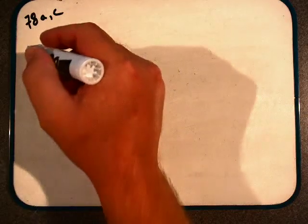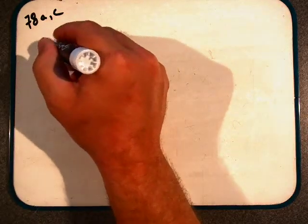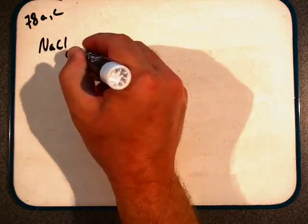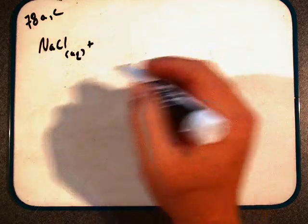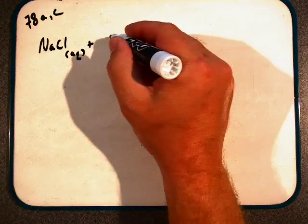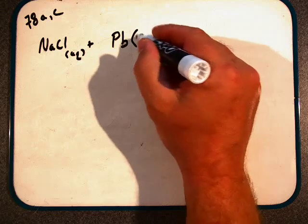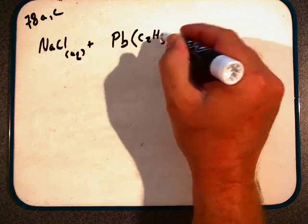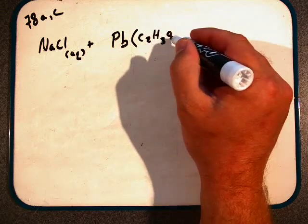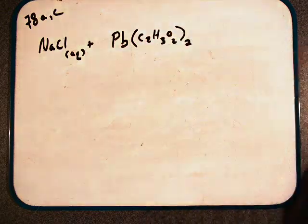I'm going to do parts A and C. Part A looks at reacting sodium chloride and lead-2-acetate. Sodium chloride would be NaCl, and lead-2-acetate would be lead with acetate, C2H3O2, and there would be two of them.